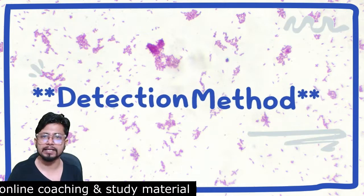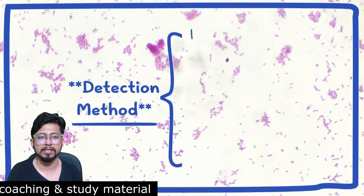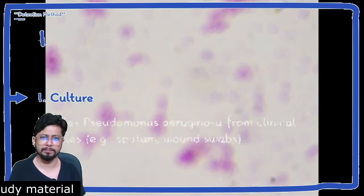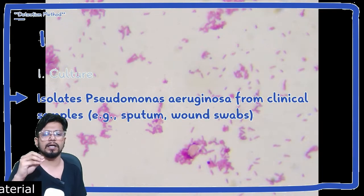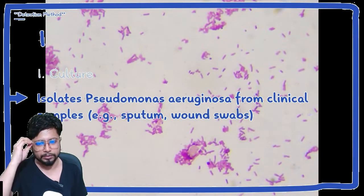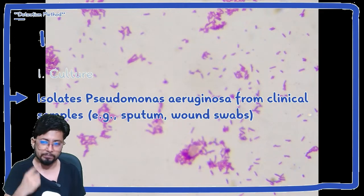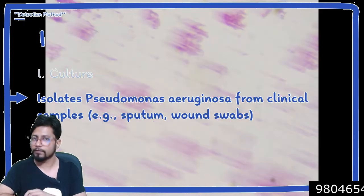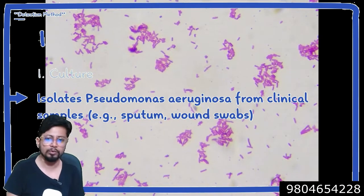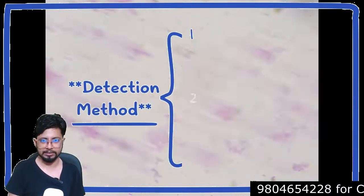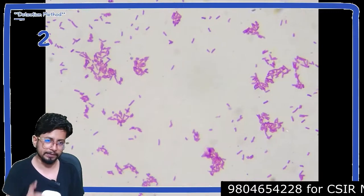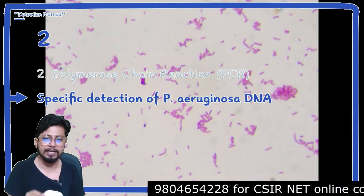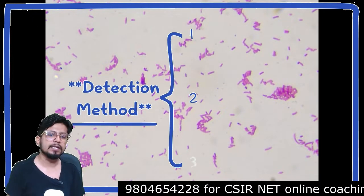The detection methods used start with culture — simple culture method isolates Pseudomonas aeruginosa from clinical samples, particularly sputum samples. For soft tissue or wound infections, wound swabs are also taken. The second detection method is polymerase chain reaction (PCR), which specifically detects the DNA of Pseudomonas aeruginosa.